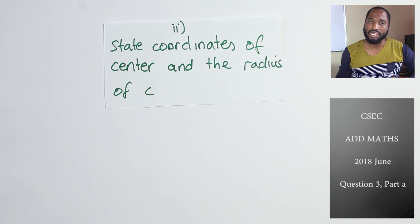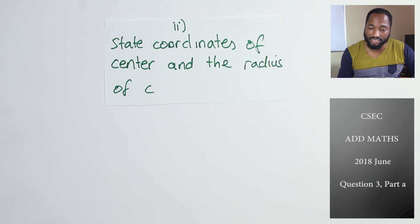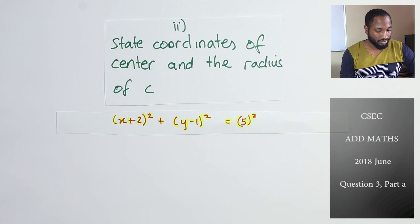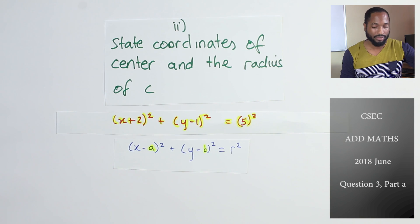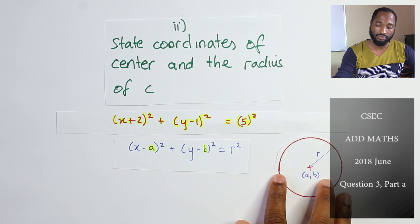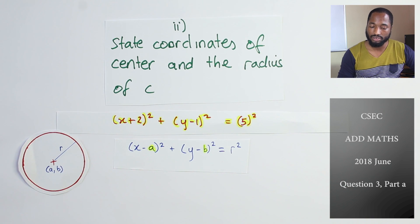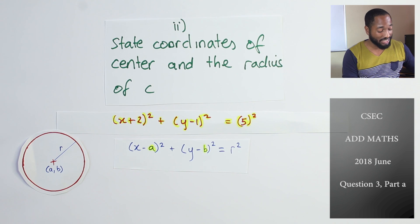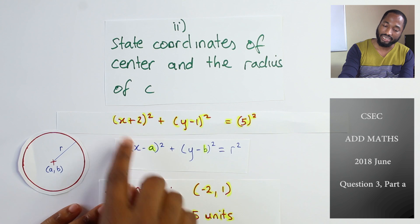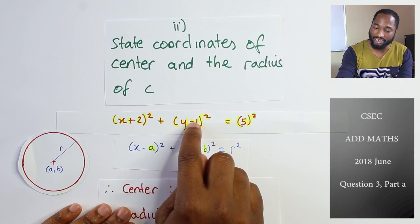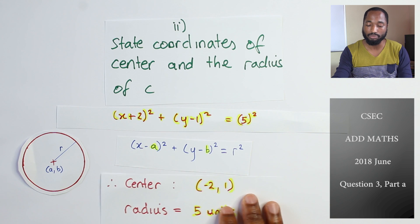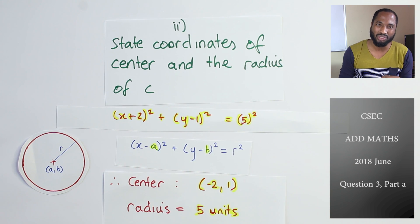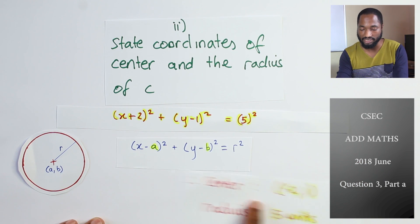Part two asks us to state the coordinates of the center and the radius of C. This is what we found in part one. In the standard form of a circle equation, A and B are the center coordinates and R is the radius. Keep in mind there's a little trick: the expression has a negative, so it represents negative B. You see negative 1 here, so B is actually 1. The center is therefore at negative 2, 1, and the radius is straightforwardly 5. Question 2 is basically just using the information from question 1 and pulling out the center and radius values.